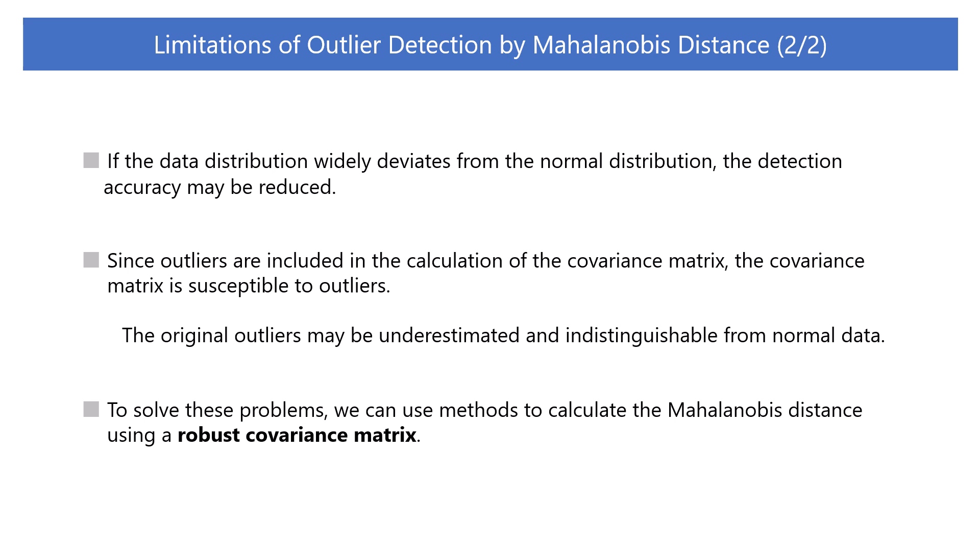Another problem is that if the data distribution widely deviates from the normal distribution, the detection accuracy may be reduced. In addition, since outliers are included in the calculation of the covariance matrix, the covariance matrix is susceptible to outliers. When outliers are included, the variance may be overestimated or the shape of the distribution may be significantly distorted. If the Mahalanobis distance is calculated based on this distorted covariance matrix, the original outliers may be underestimated and indistinguishable from normal data. To solve these problems, we can use a method to calculate the Mahalanobis distance using a robust covariance matrix, which is covered in the following sections.